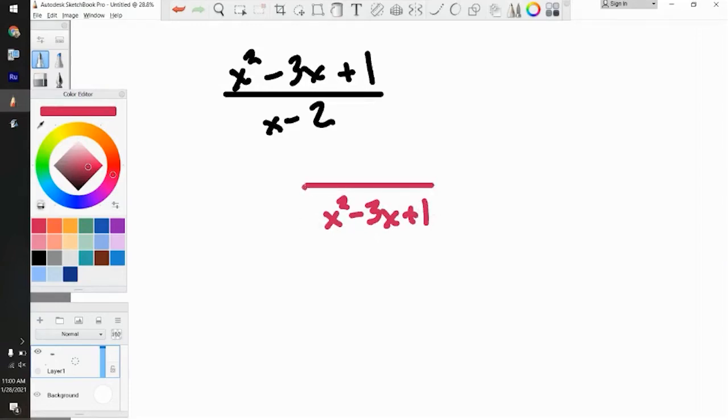So first thing is rewriting it using the long division format. So that's what we're going to do. Then you have to think, what do you multiply X by to get X squared? It would be X.